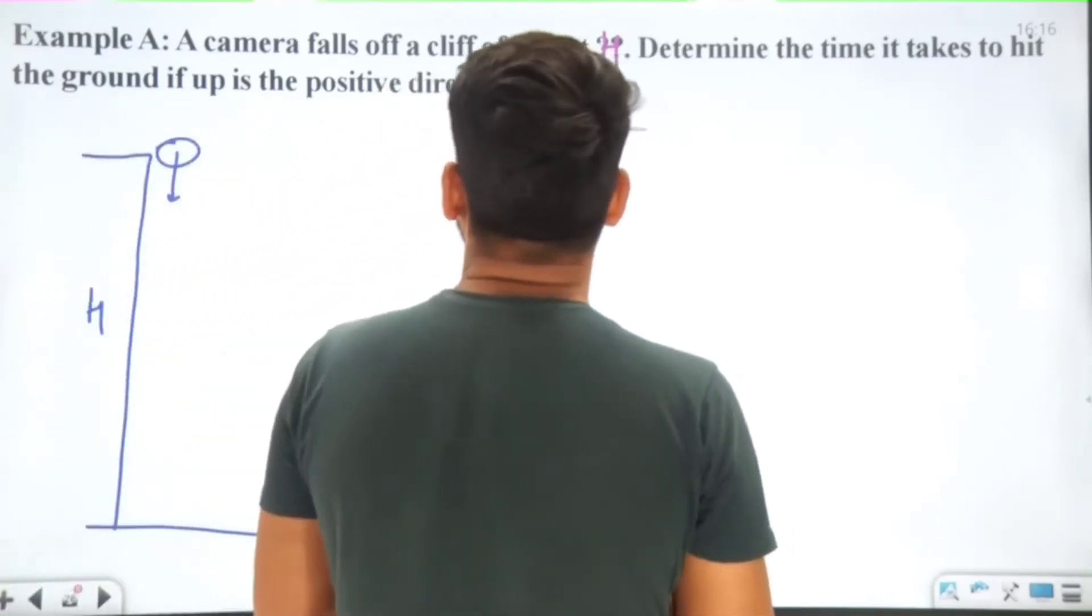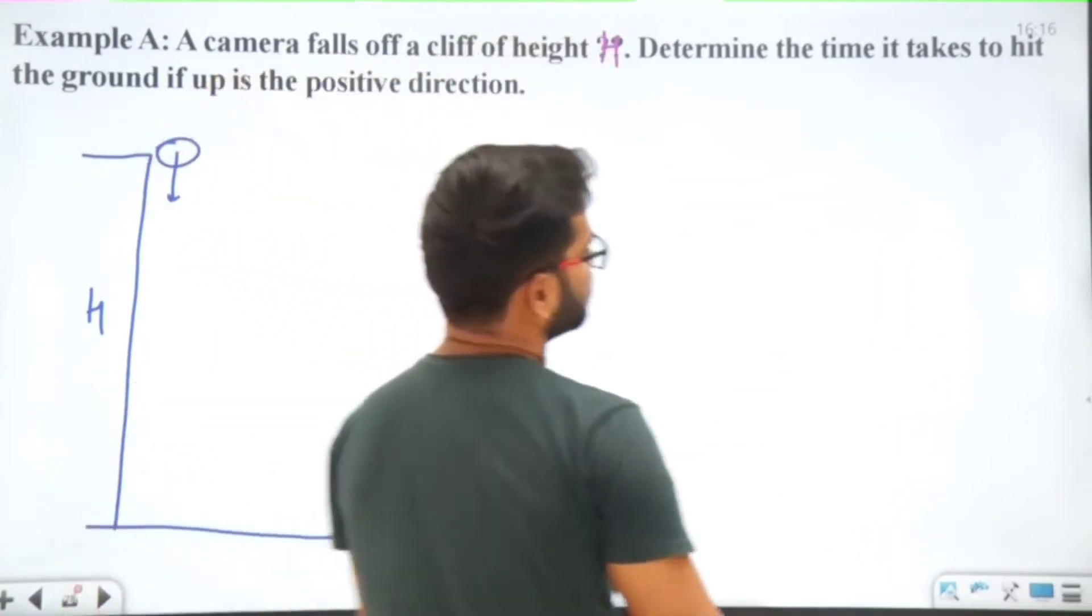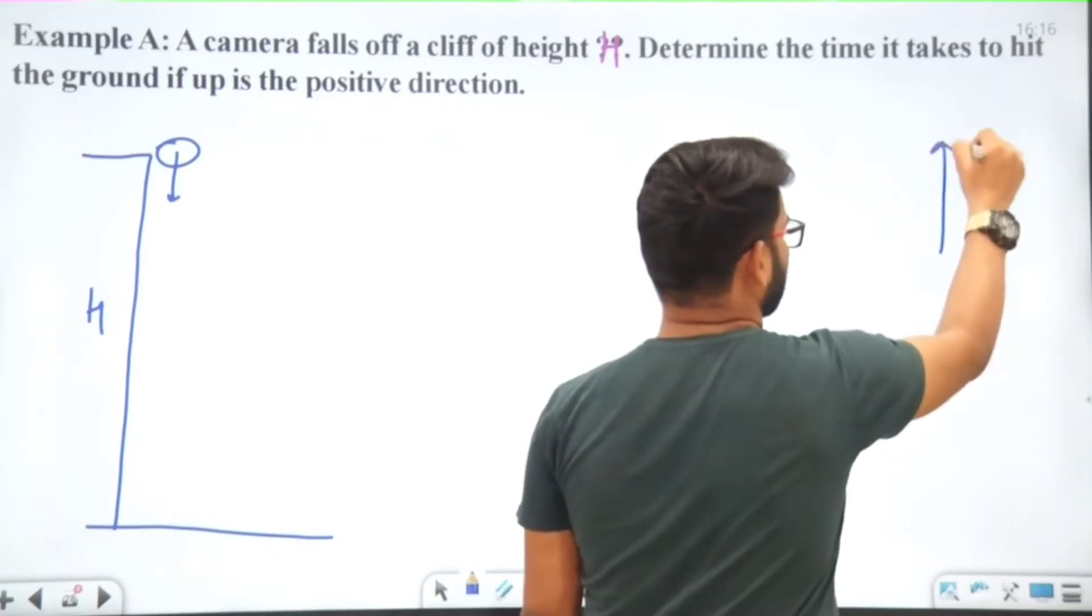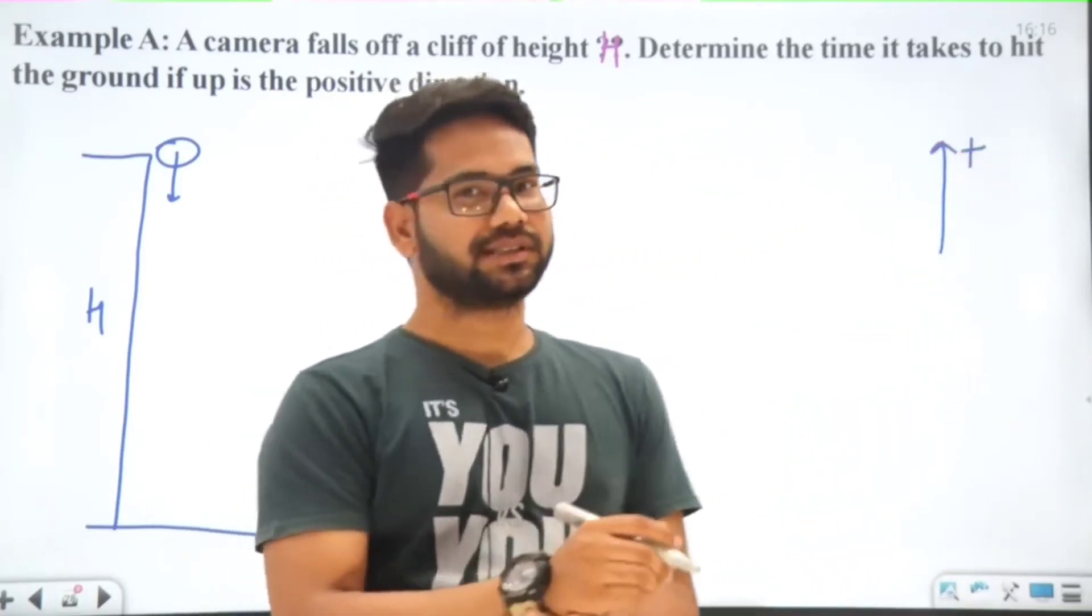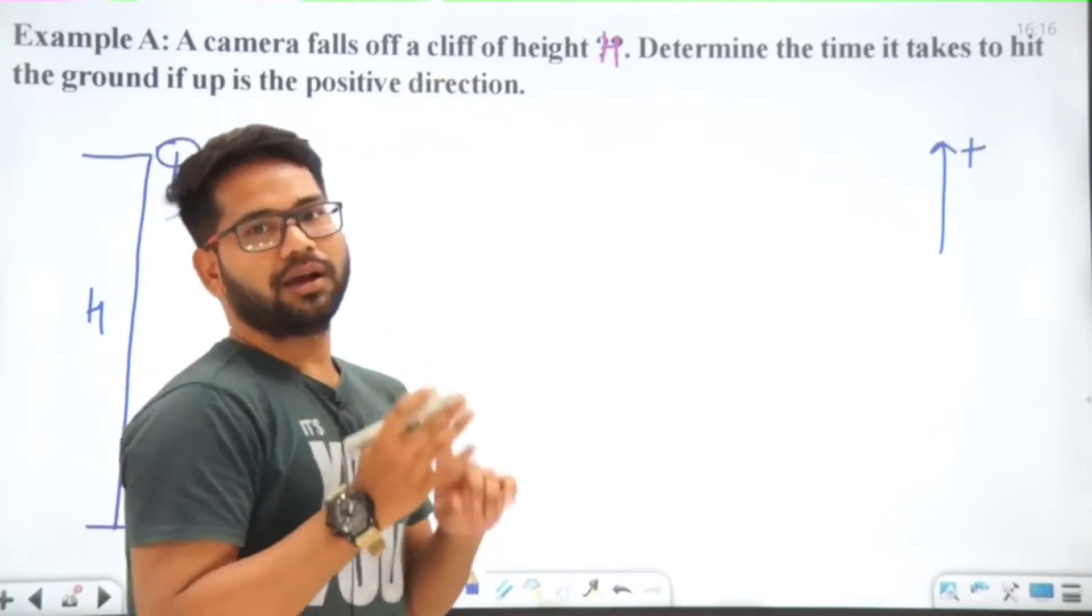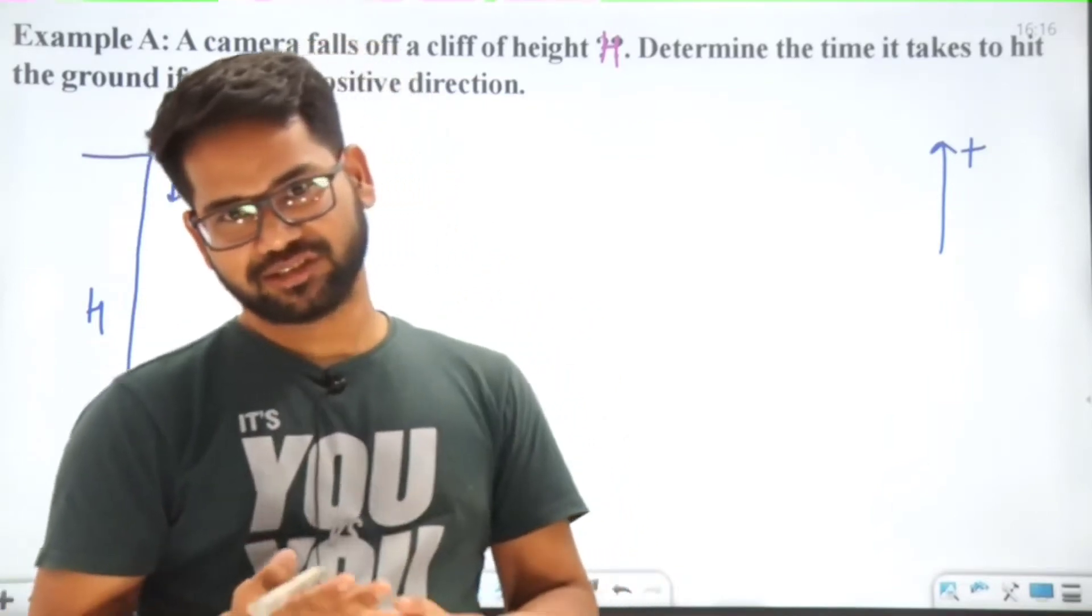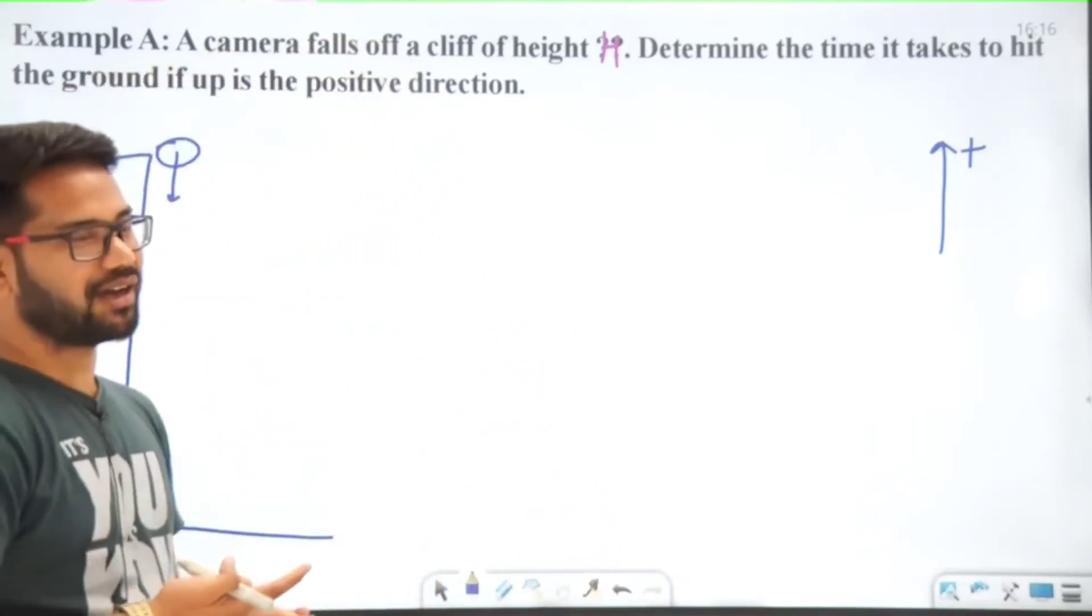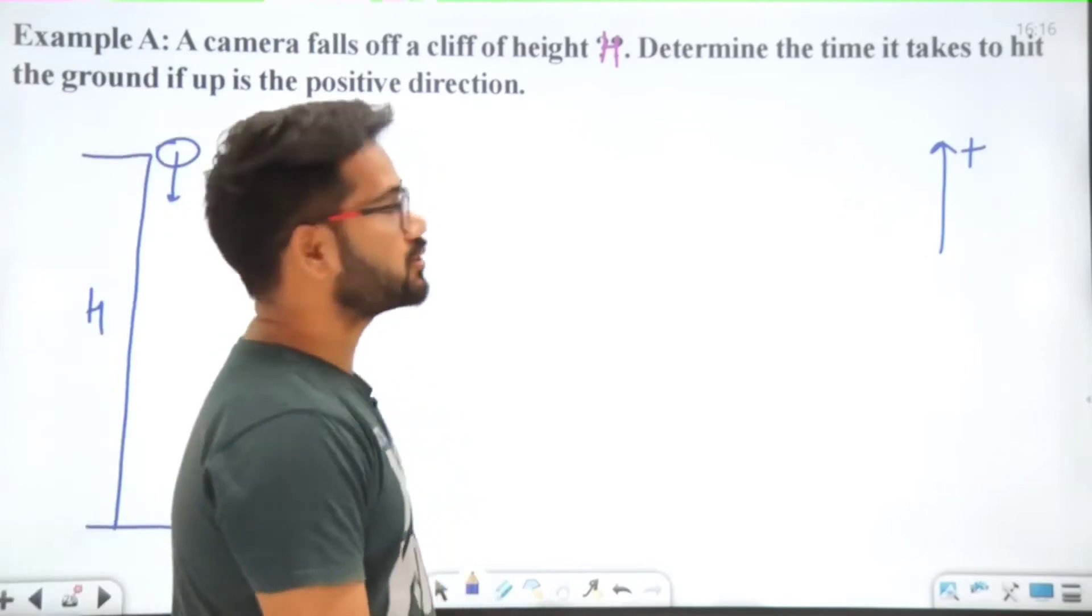We have to take upward as the positive direction and apply the equations. In those equations, we have initial velocity and final velocity that involve direction, and displacement also involves direction. You have to determine a positive direction, so the other will be negative. These equations apply for one-dimensional motion.